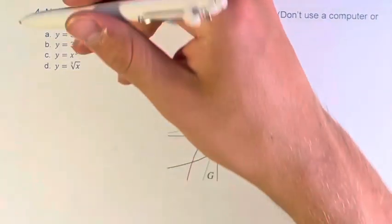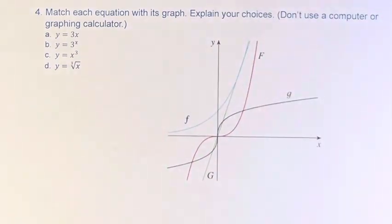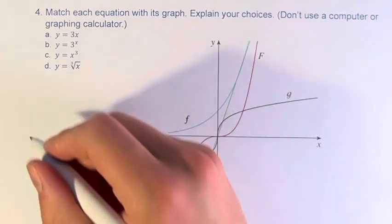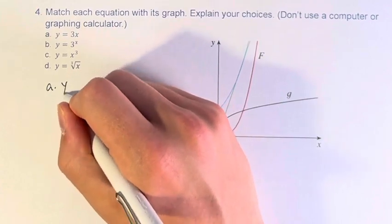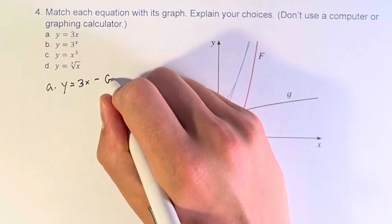So the first thing we can get out of the way is y equals 3x is a linear function, therefore it is a line, and the only line that we see here is this green one here, which is function g. So a, y equals 3x, is represented by function g.